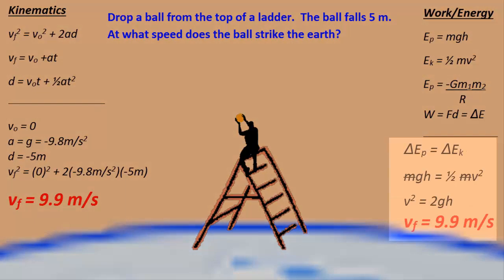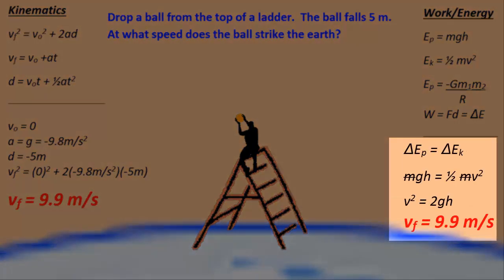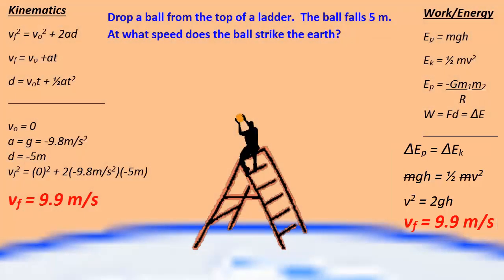And we find that the final velocity of that ball depends only on g and h. And we get the same answer that we had on the left-hand side, 9.9 meters per second. So we can use kinematics, and we can use work energy, and we can achieve the same results.